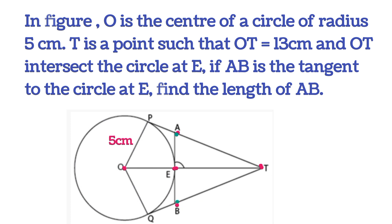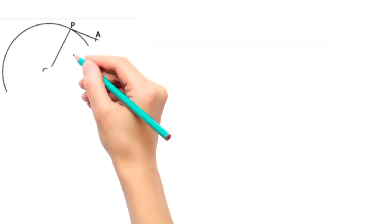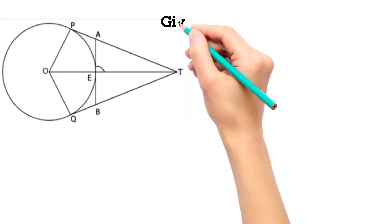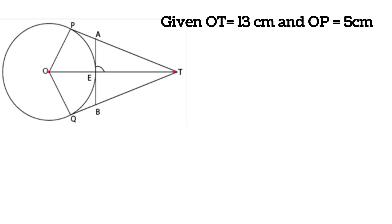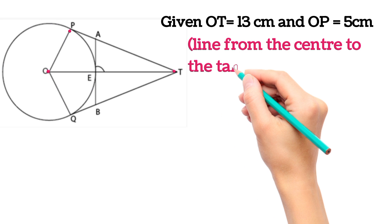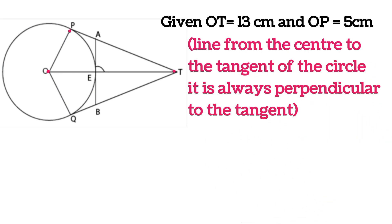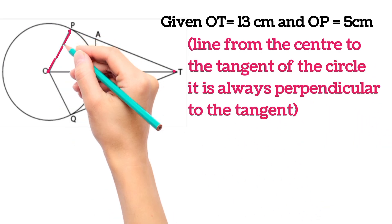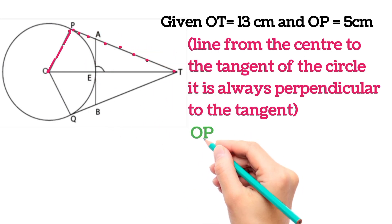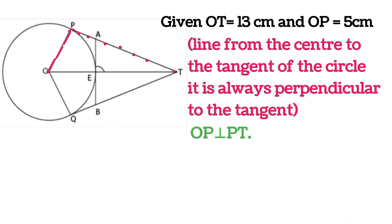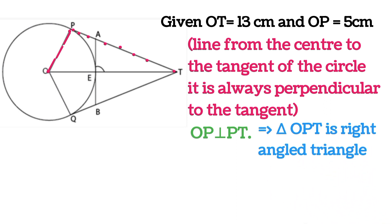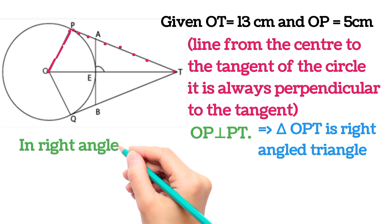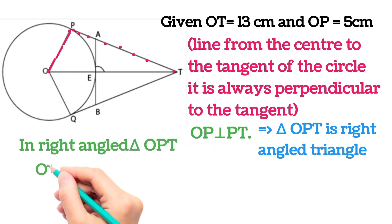Let's solve this question. It is given that OT is 13 centimeters and OP is 5 centimeters. We also know that the line drawn from the center to the tangent is perpendicular, so the radius OP is perpendicular to the tangent PT. This implies triangle OPT is a right angle triangle.